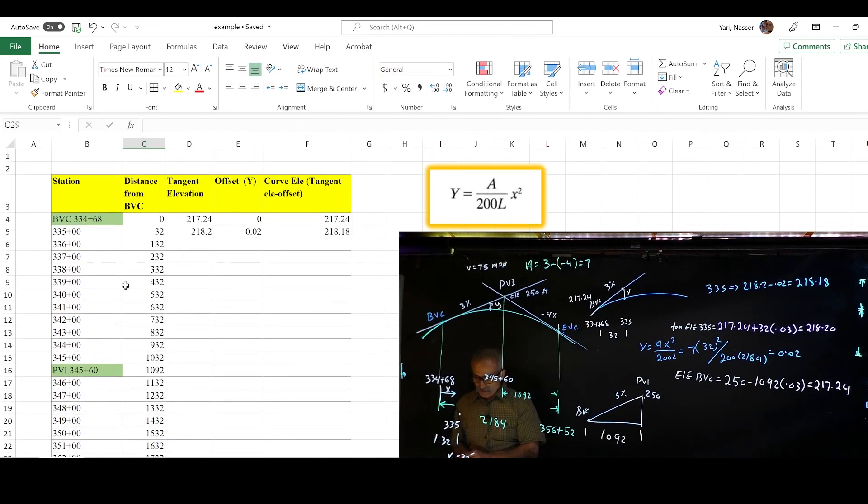So now you get this all set, we can continue with the rest of them. Click on the tangent elevation, grab the corner, and bring it all the way down to the bottom.